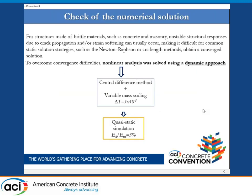For structures made of materials such as concrete or masonry, an unstable structural response due to crack propagation and strain softening can usually occur, making it difficult for common static solution strategies such as Newton–Raphson to obtain a convergent solution. To overcome convergence difficulties, the nonlinear analysis was solved using a dynamic approach. In particular, in order to obtain a quasi-static solution, the ratio between the kinetic energy and the total energy of the model should be less than 5%.